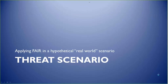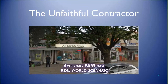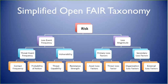What we're about to walk through is a condensed version of what we've done as the case study used in our training. Our case study is called the Unfaithful Contractor. This would normally be woven in segments in a two-day course. We base it on the overall taxonomy, and because it's a hypothetical, we have the opportunity to create estimates of the main factors at the lowest level: contact frequency, probability of action, threat capability, resistance strength, asset loss factors, threat loss factors, and organization and external loss factors. Today we'll do a slightly abbreviated version, and we'll be open to questions as we go along.